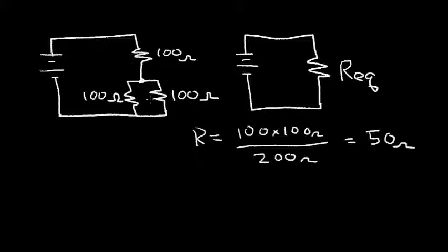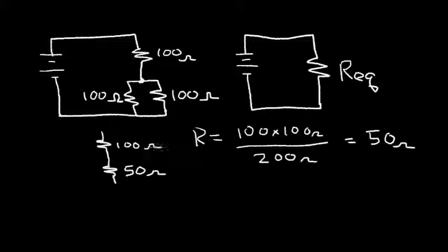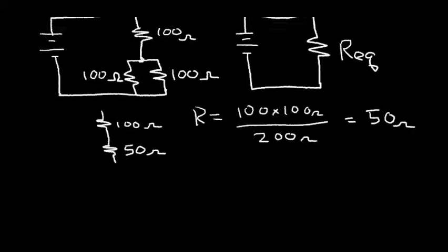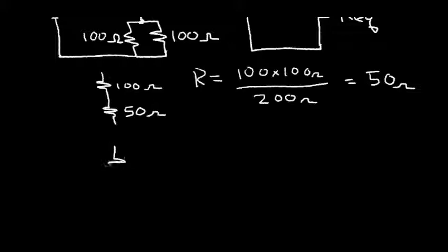That equals 50 ohms. So we can substitute 50 ohms for these two 100 ohm resistors in parallel. When we do that, we get 100 ohms in series with a single 50 ohm resistor. We know from before that resistors in series add, so the equivalent resistor REQ is equal to the sum, which is 150 ohms.